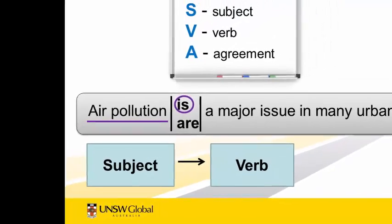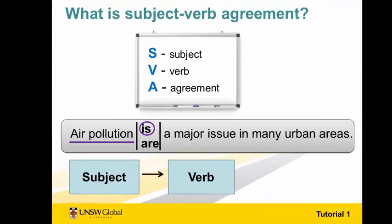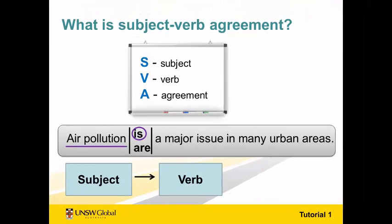Subject-verb agreement is a common error for many students, especially in academic writing exams where you need to write quickly. So I'd like you to consider your accuracy in this area. Is subject-verb agreement something that you could improve?